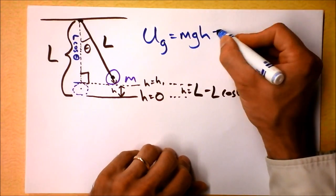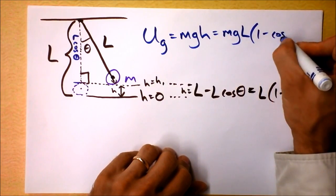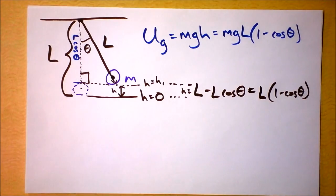So the potential energy then we can write is m times g times L times 1 minus the cosine of theta. Alright, let's work with that result.